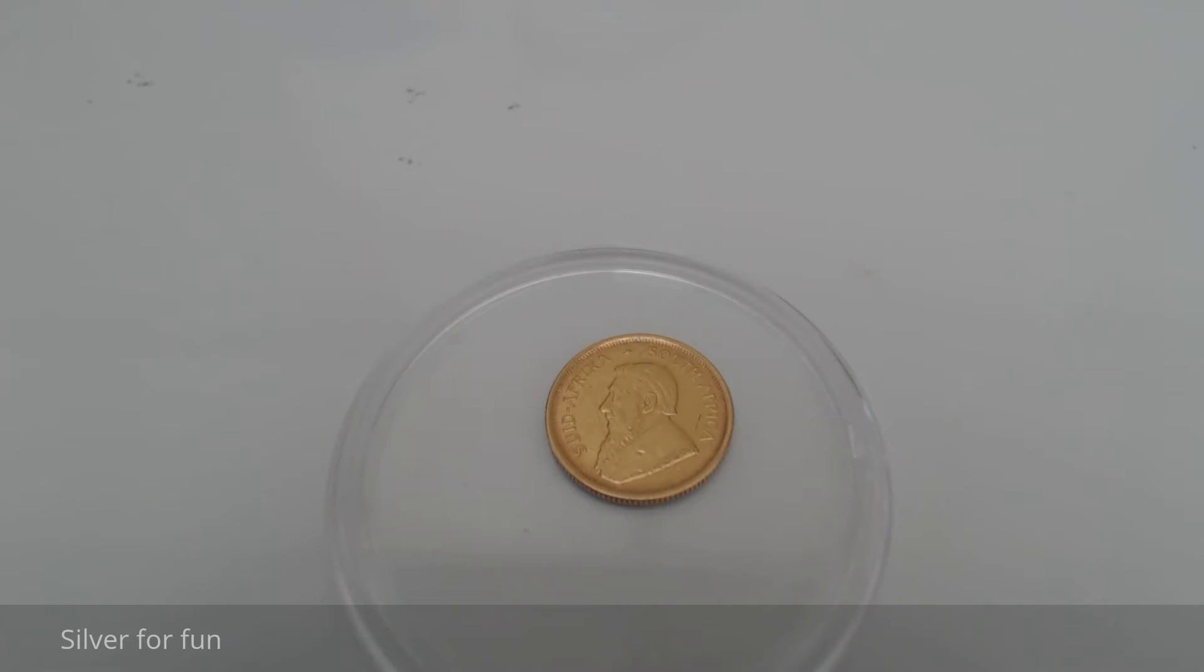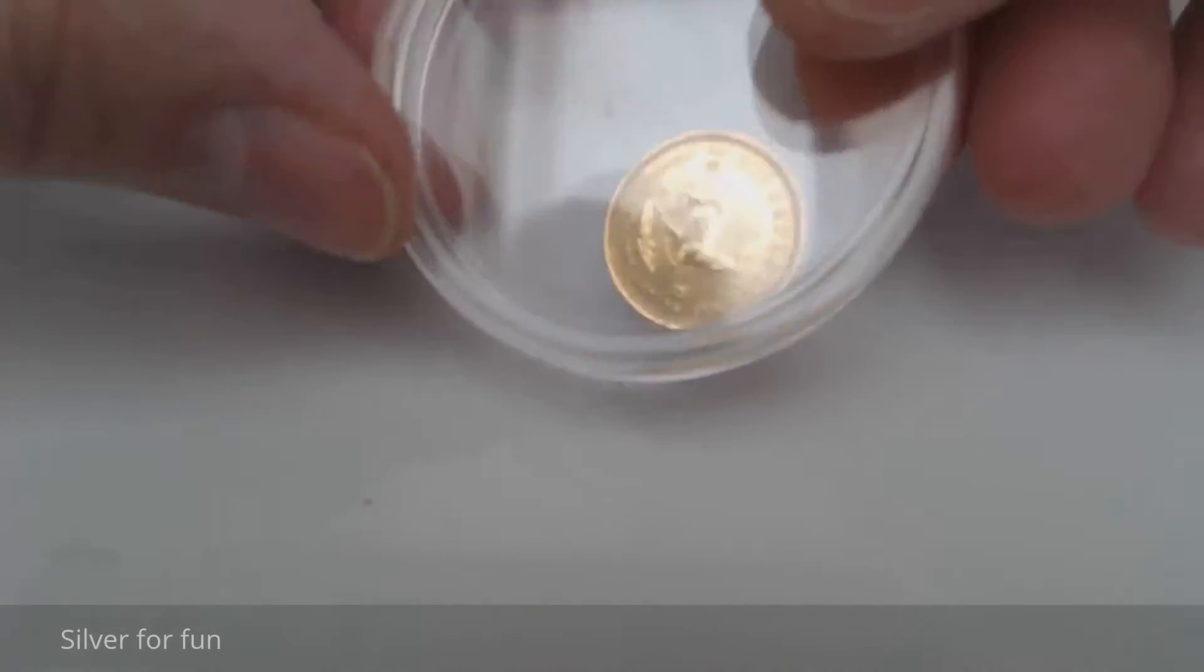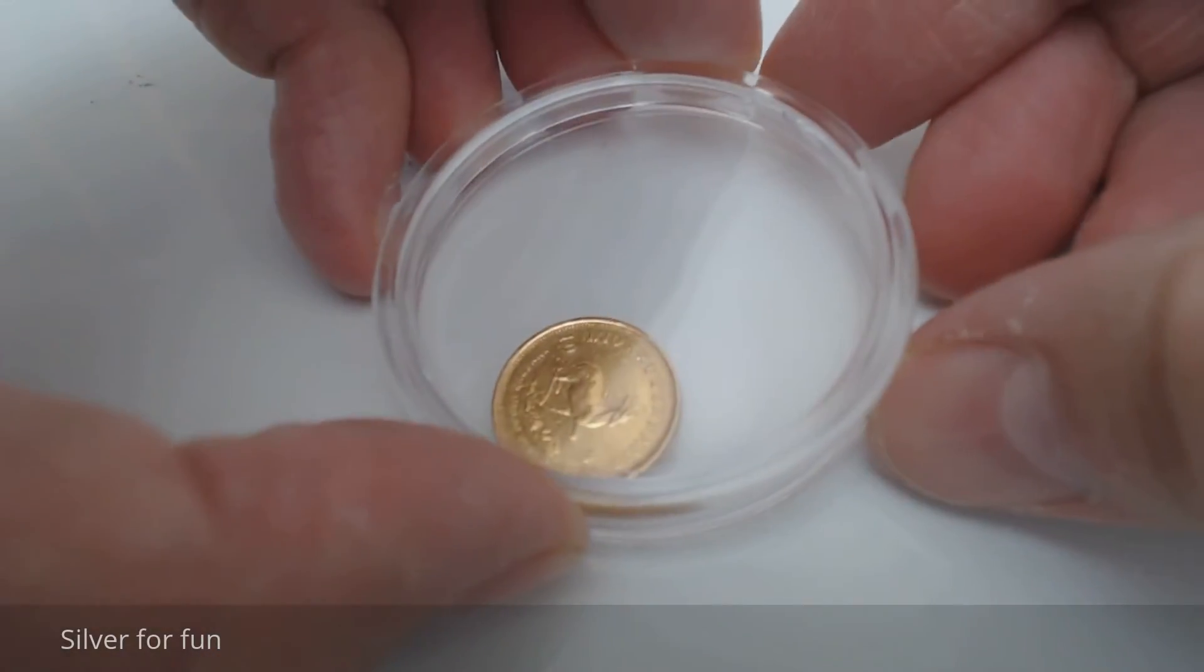They weigh a little bit more, but the actual gold content is one-tenth of an ounce. So that's the way they work it out on the Krugerrand, and that's the way they work it out on the one-ounce one as well. The one-ounce one doesn't weigh one ounce.